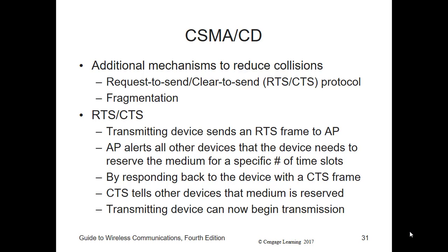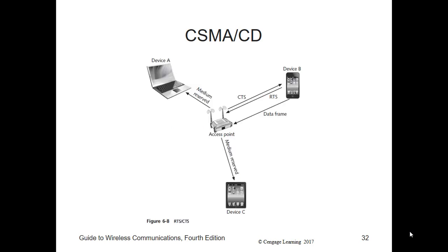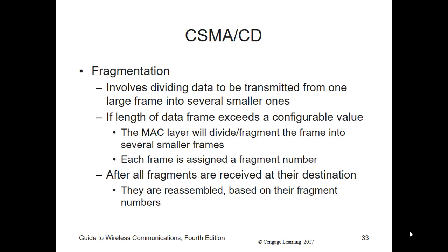The transmitting device sends a Request to Send to the AP. The AP alerts all the other devices that it is going to give a time slot to this node, responds with a Clear to Send, and tells the other devices they can't talk while someone else is transmitting. The RTS-CTS protocol does impose additional overhead, which reduces network performance, and it's not used unless there are a lot of collisions.